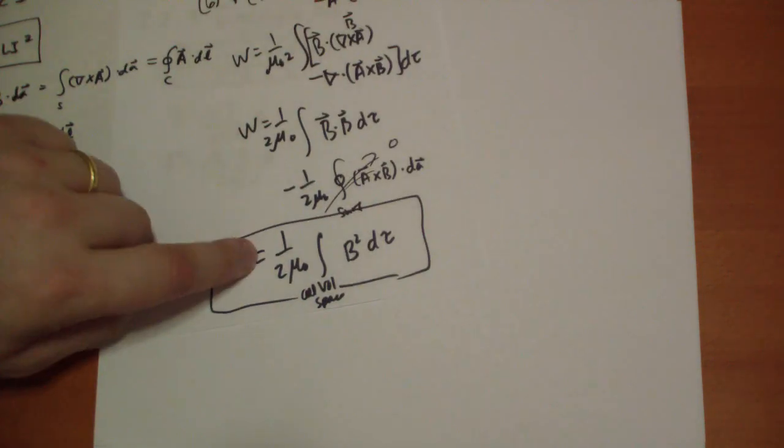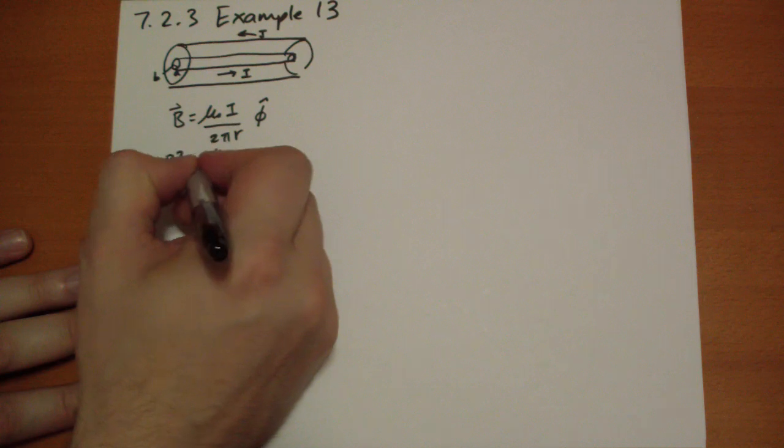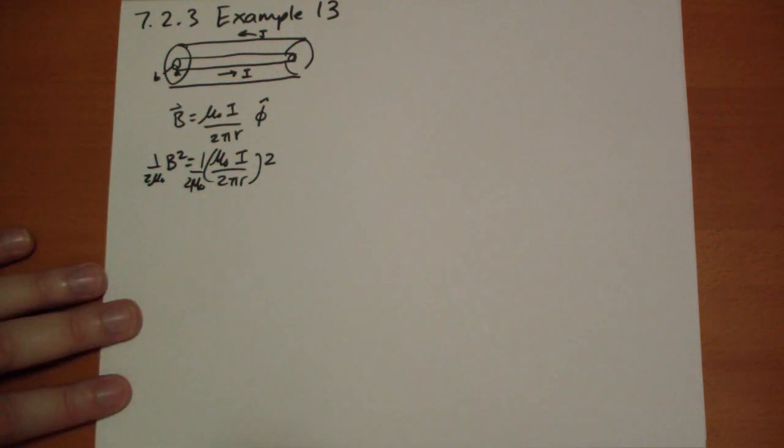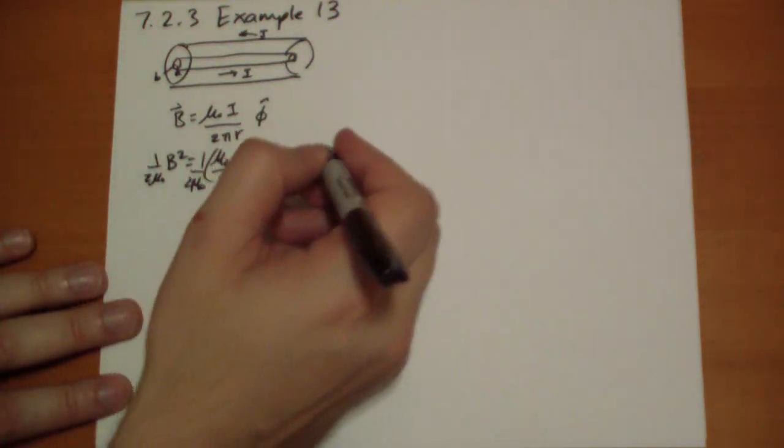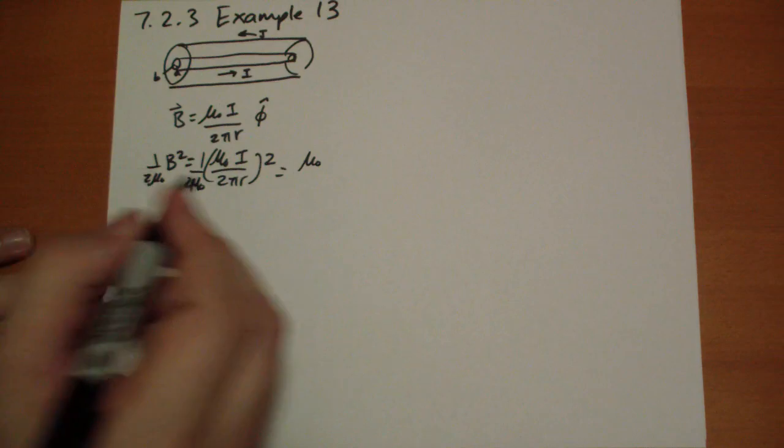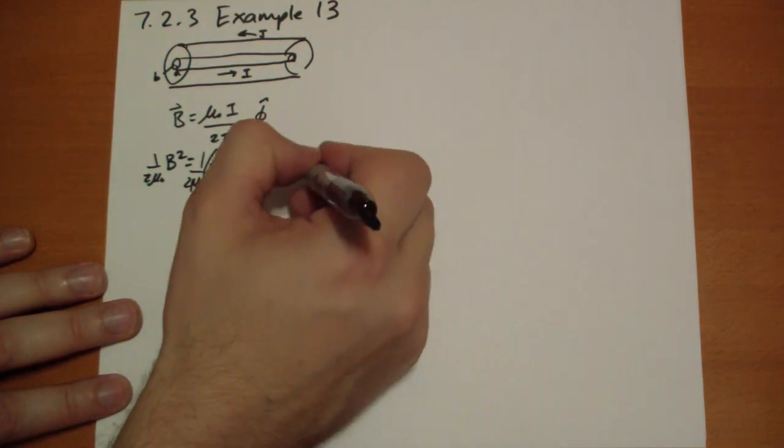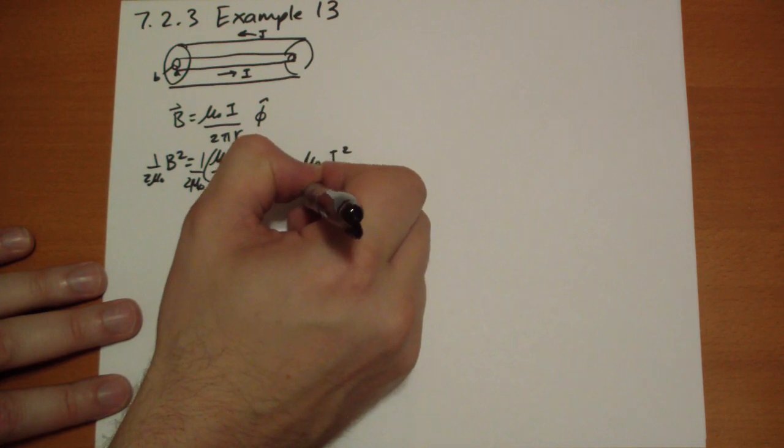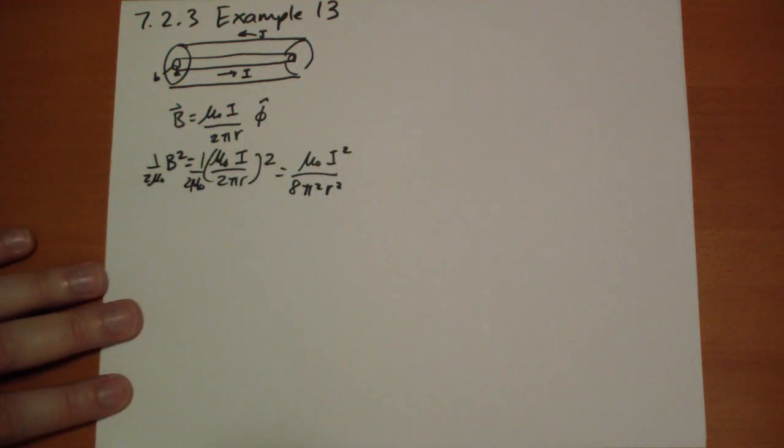And we have to, we're going to have this coefficient of 1 over 2 mu naught. Let's put that in the front. So 1 over 2 mu naught. And so after some manipulation, we get a mu naught left over on the top. We get 2 i's. We get 4, 8, pi squared, r squared.